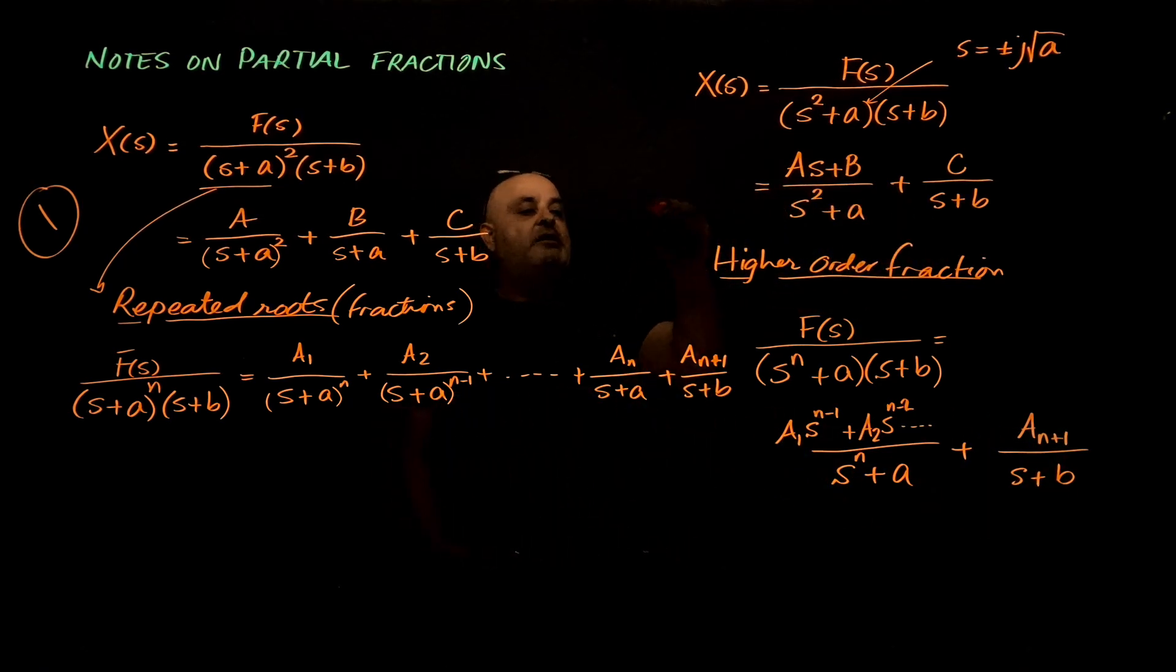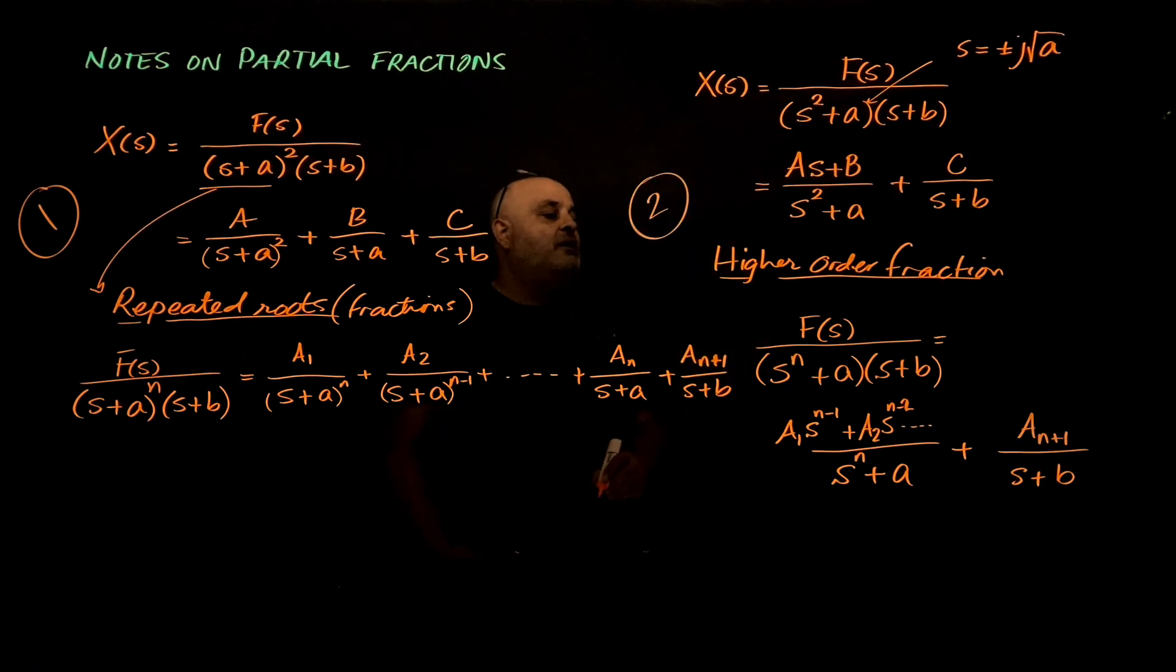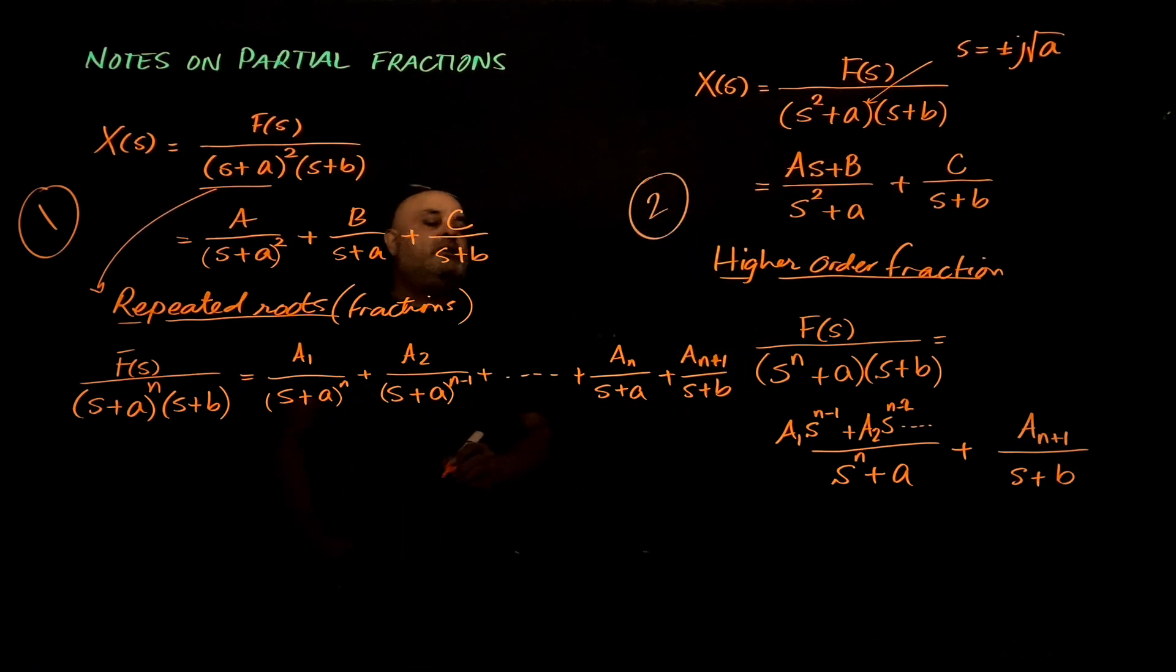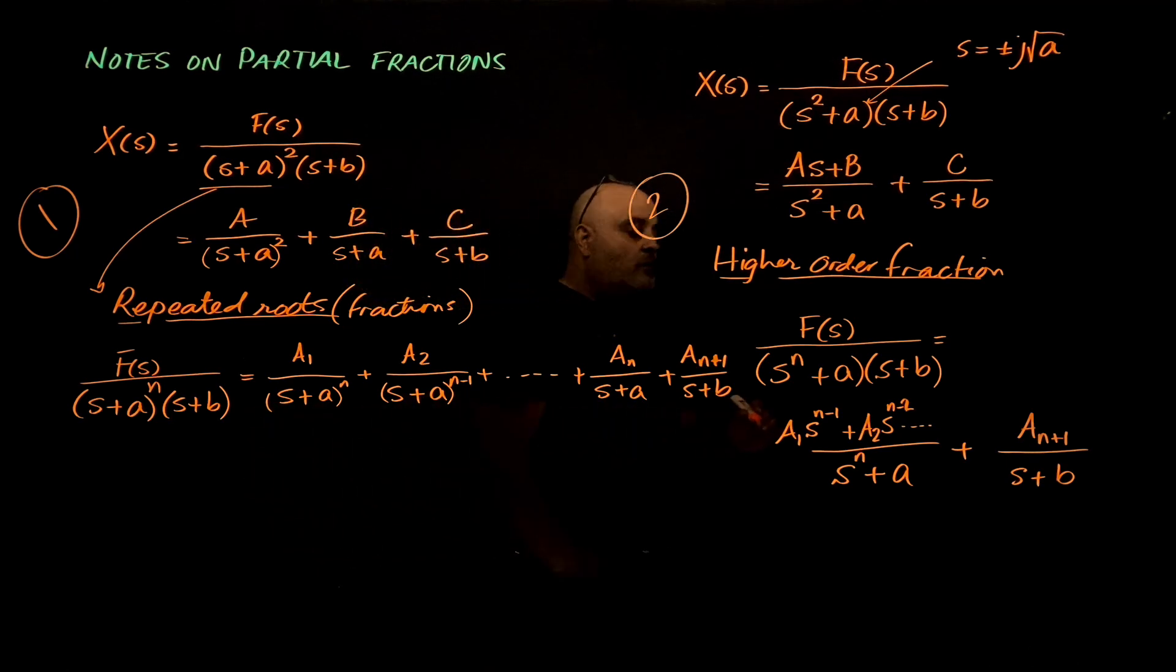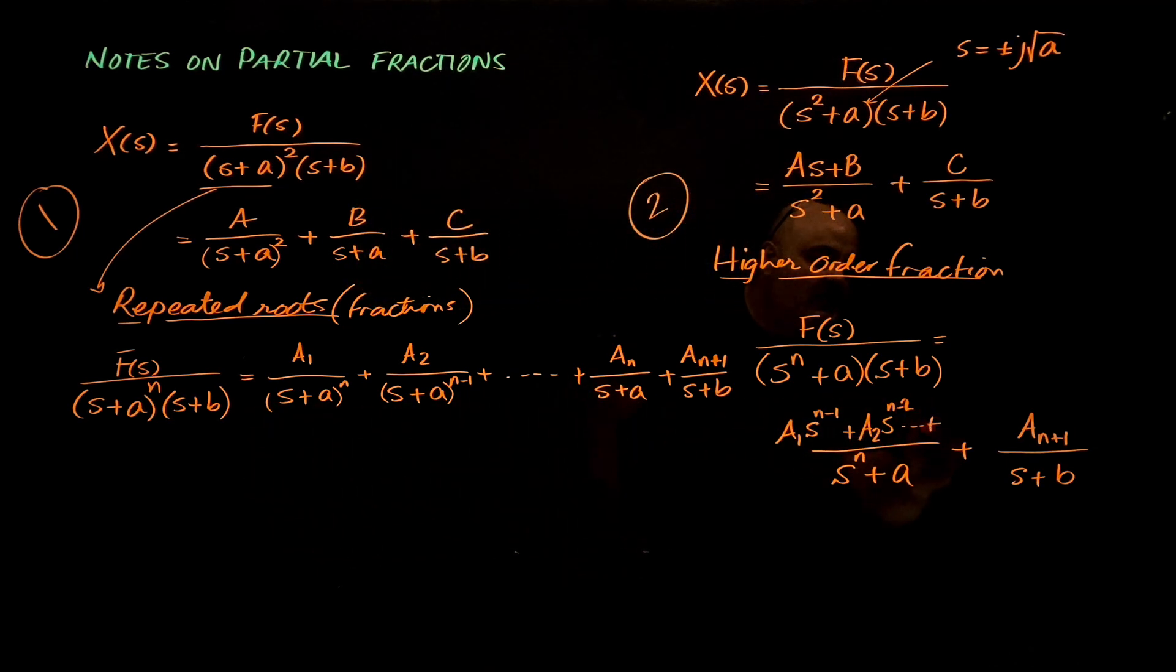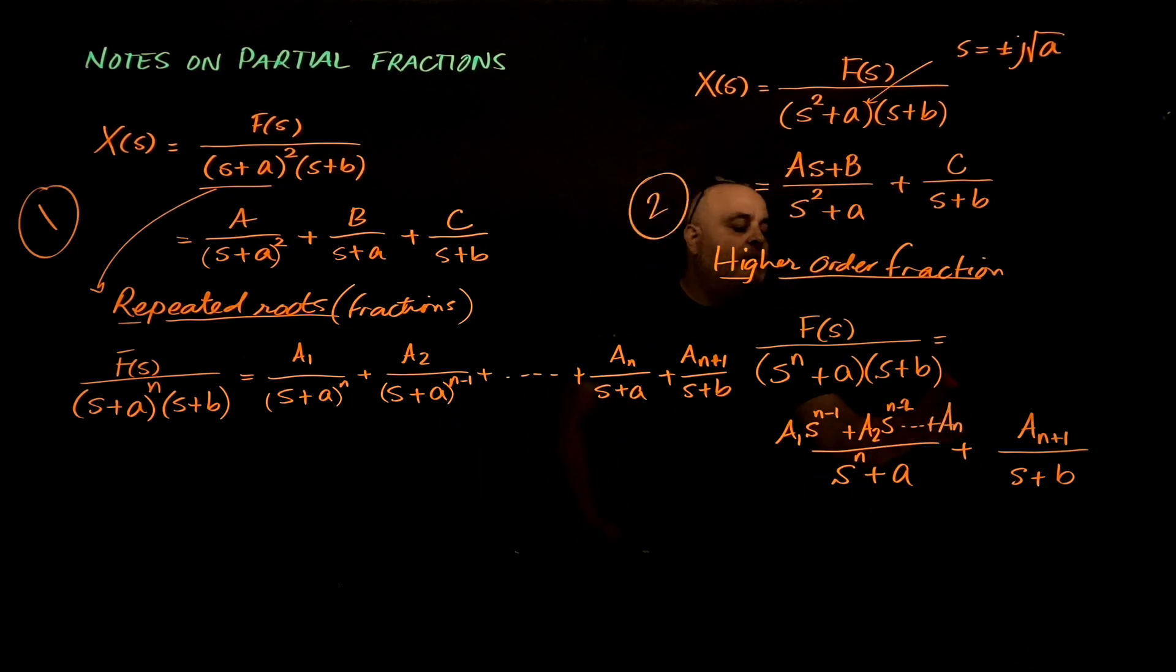So, that's the second scenario where we cannot reach simple fractions. This will go all the way until a_n. It's a_n multiplied by s power 0, which is 1.